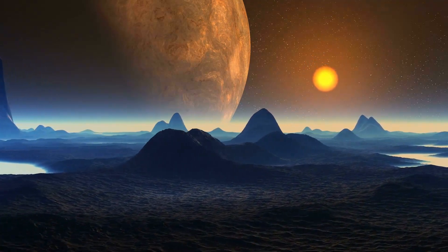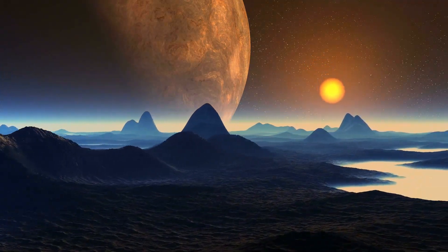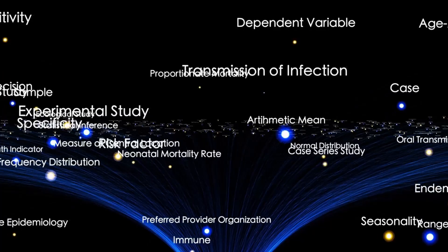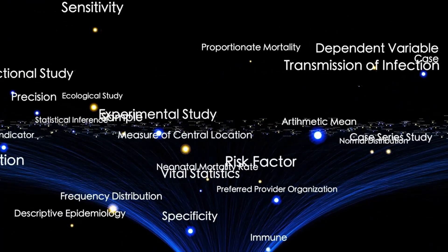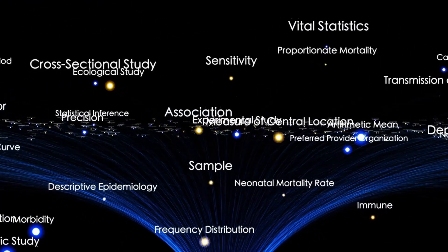NASA's Lucy spacecraft was silently scanning the Trojan asteroids orbiting Jupiter, a mission meant to uncover the untouched relics of our solar system's birth. When something happened, no one expected.